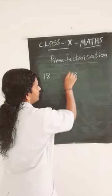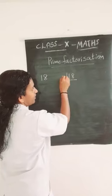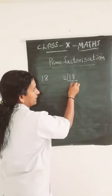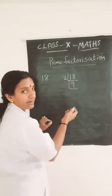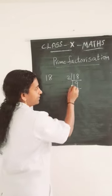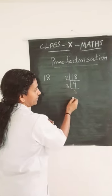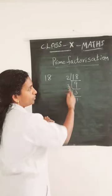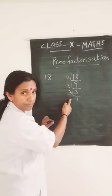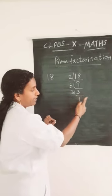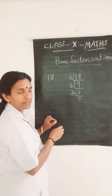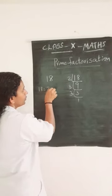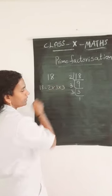Take 18 and divide by 2. What you are getting here? 9. Next, you are dividing by 3, so you are getting 3 again. Then again with 3, you are getting 1. So, you have to divide by prime numbers till you are getting the number 1. So the answer you got: 18 equals 2 into 3 into 3.